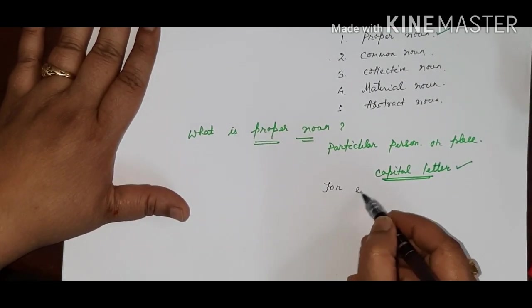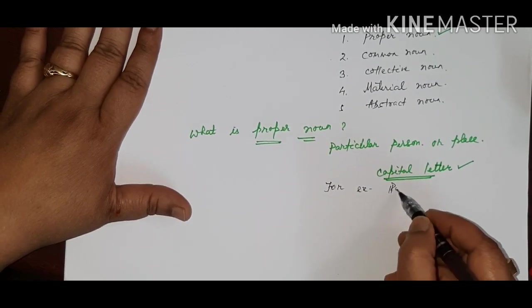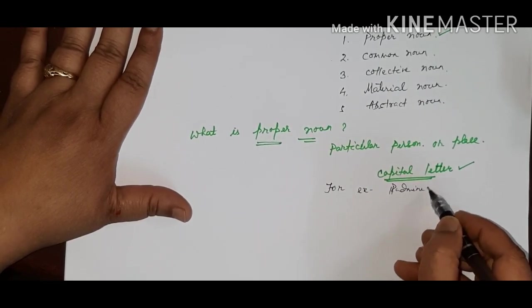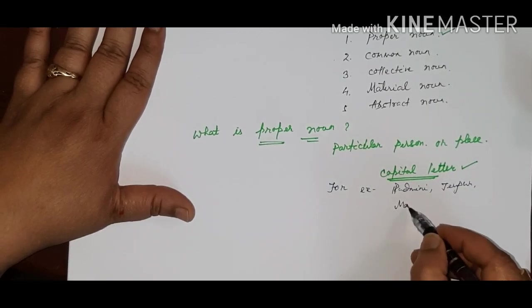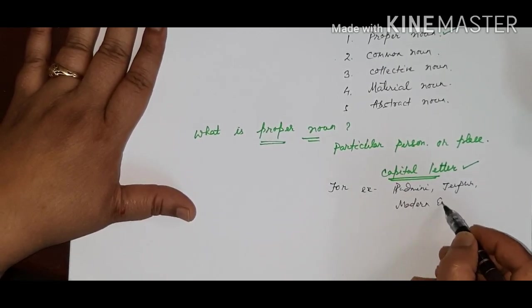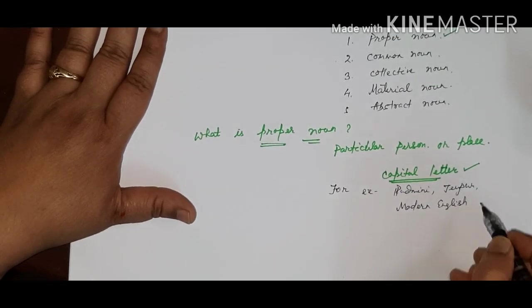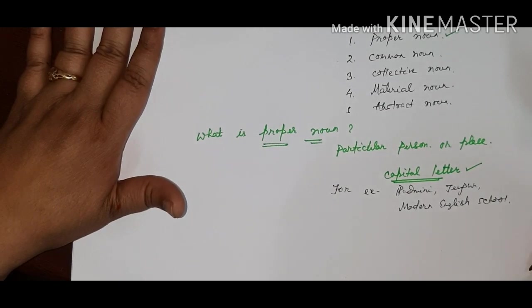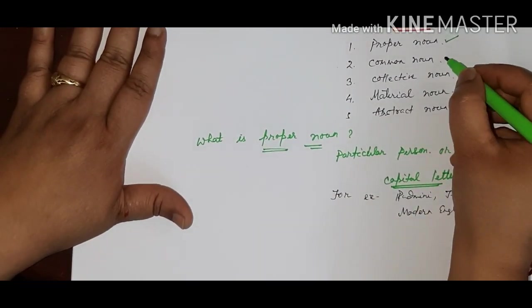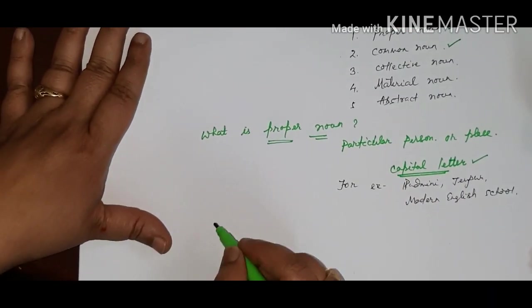Proper noun always starts with a capital letter. For example, Padmini, Jaipur, and modern English school. Next, we are going to discuss about common noun. What is common noun?